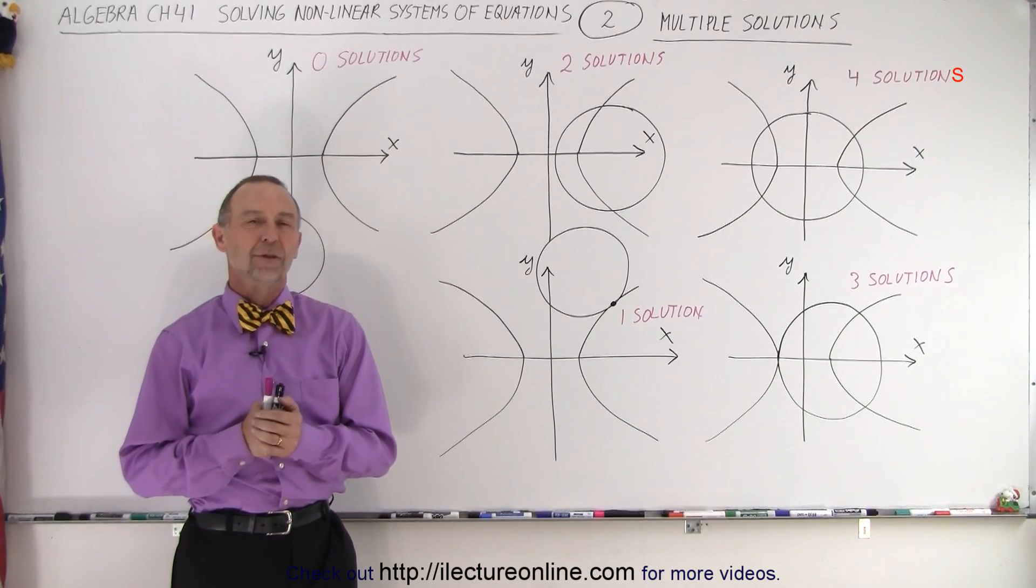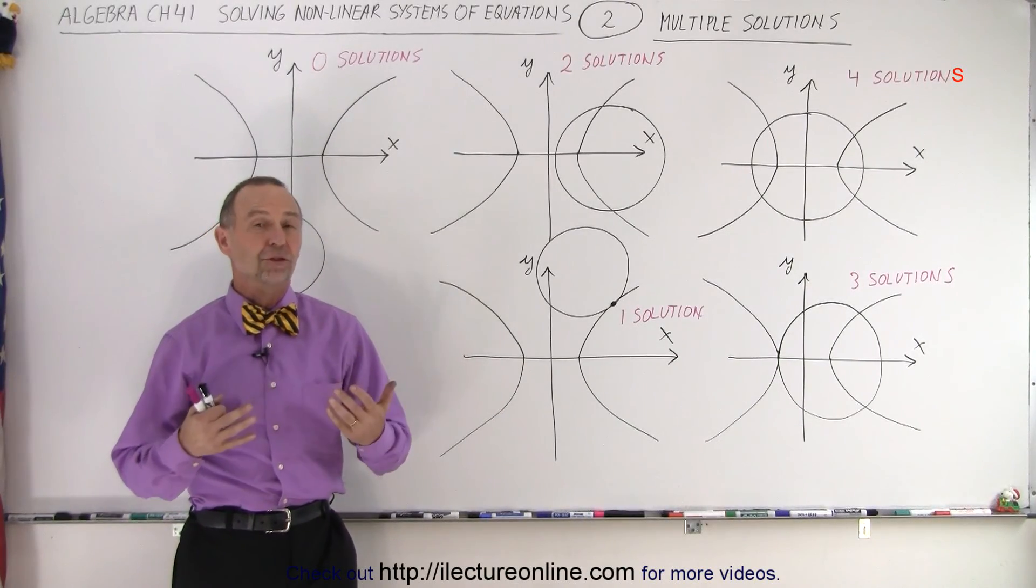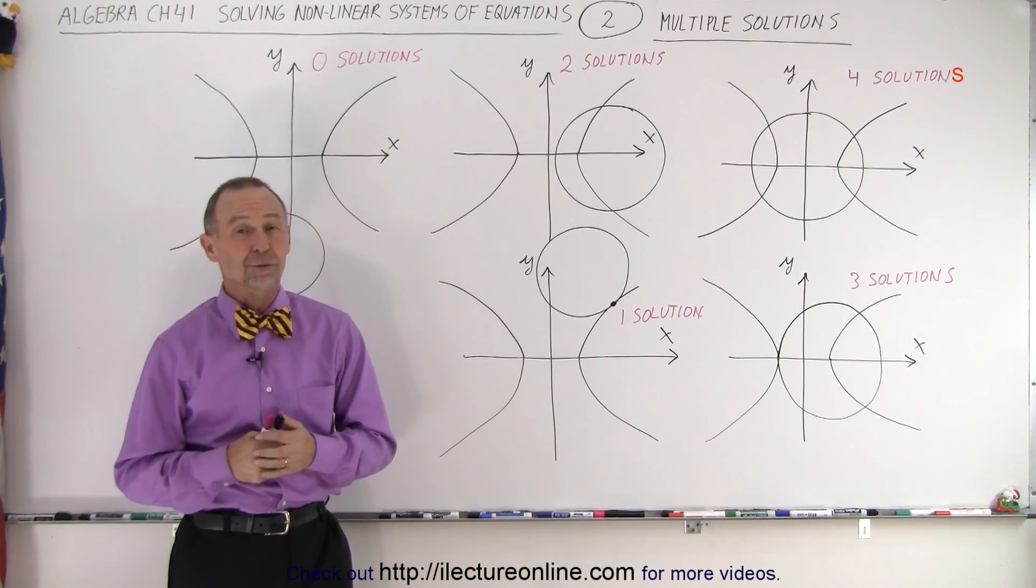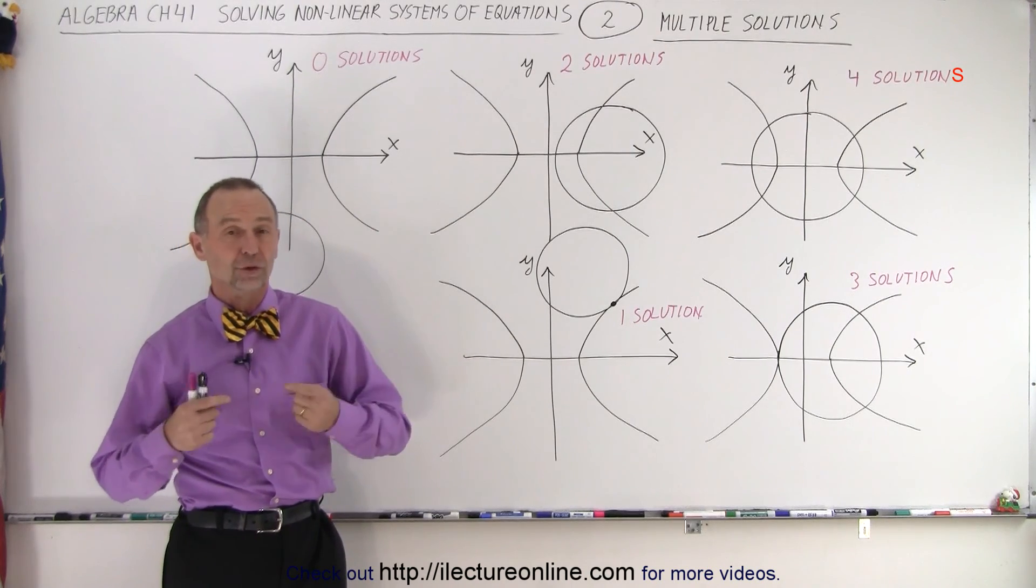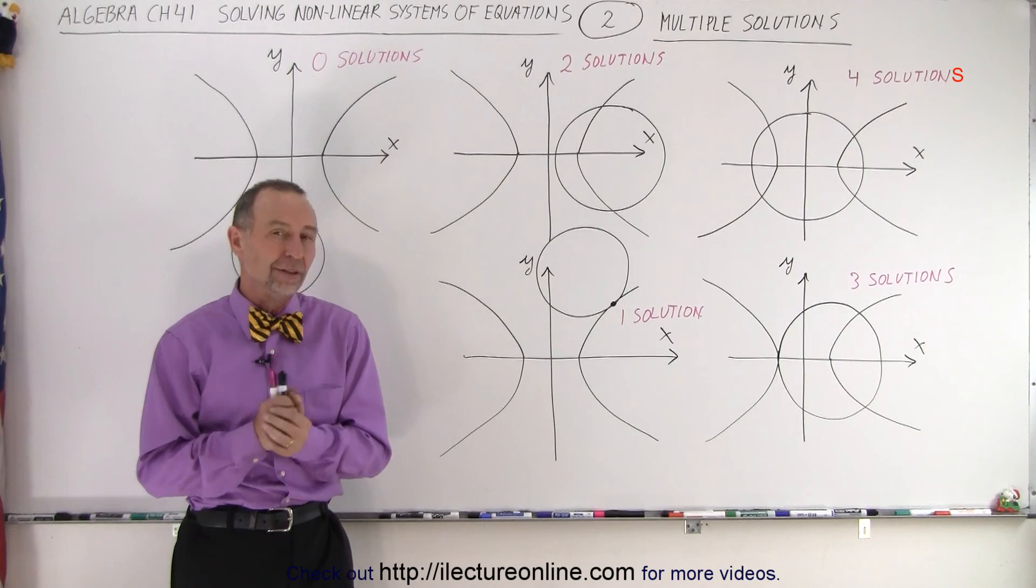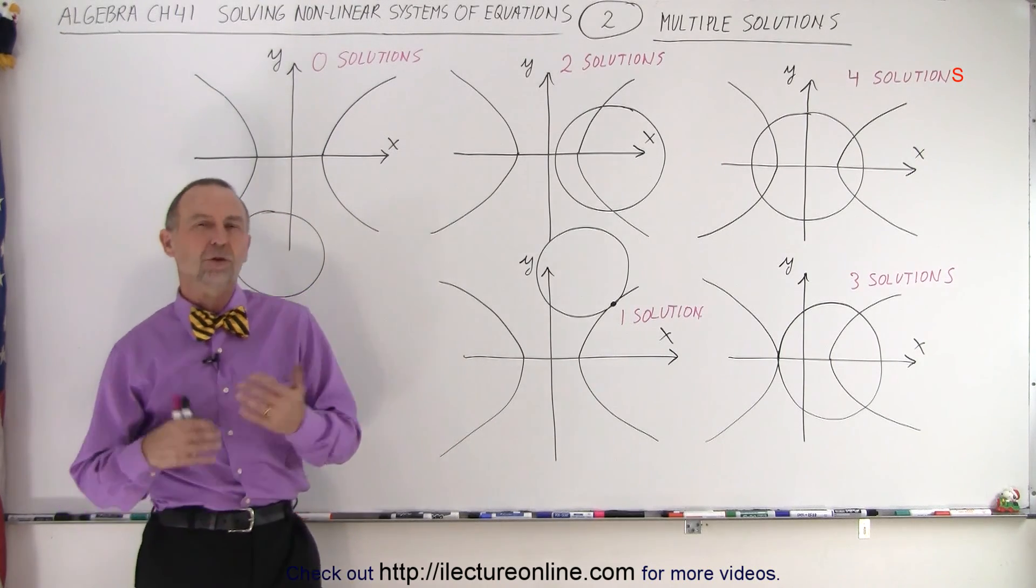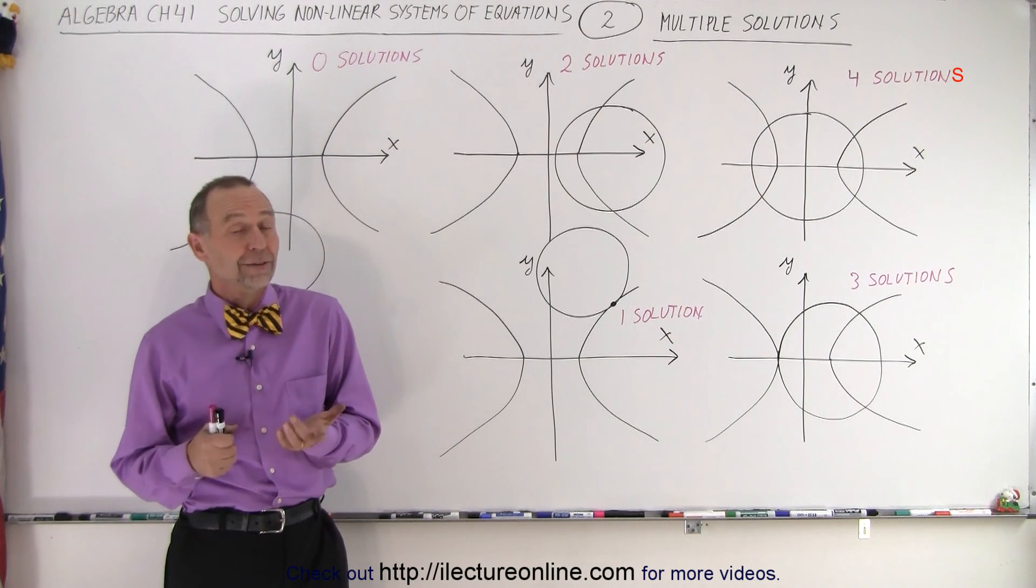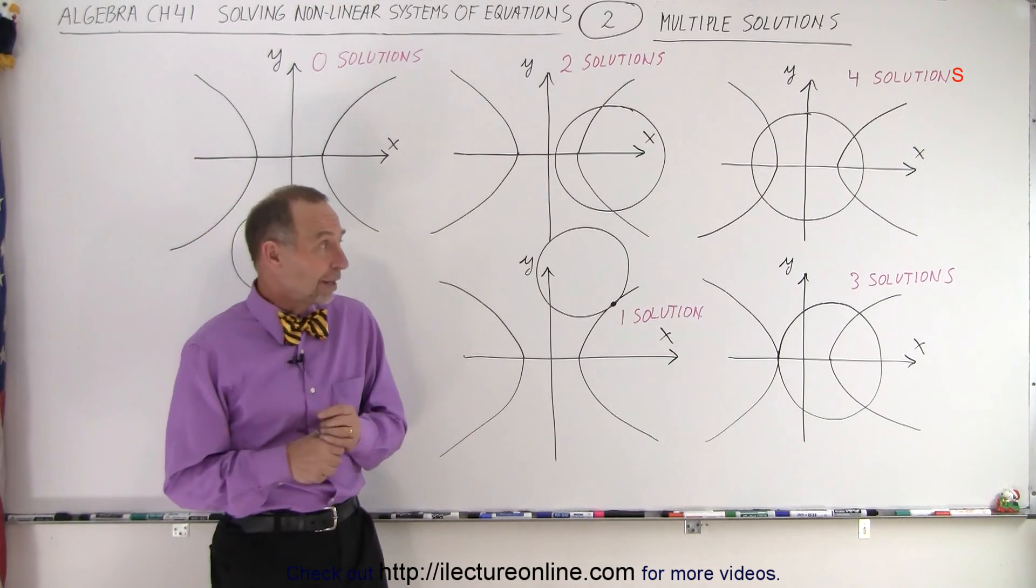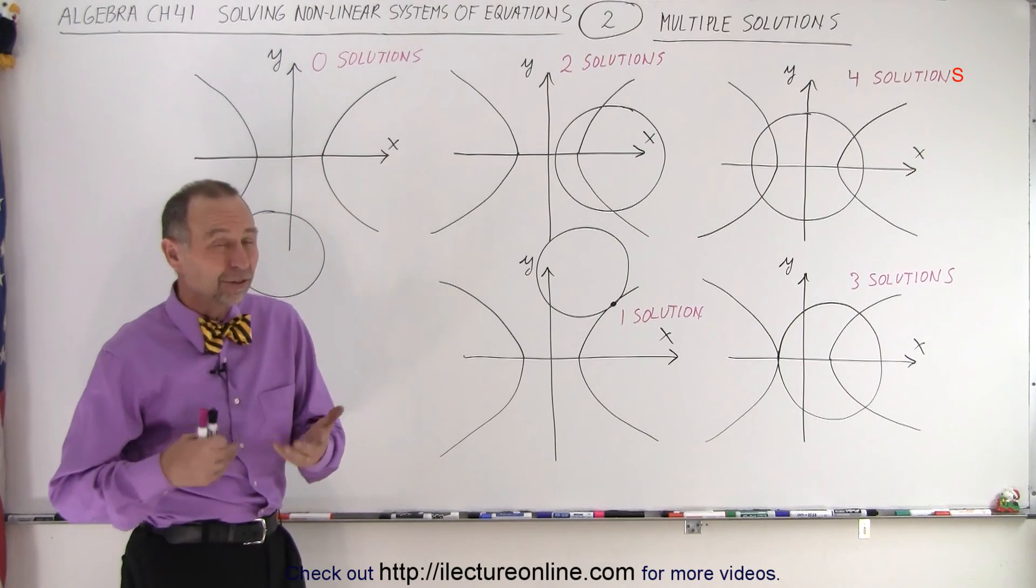Welcome to our lecture online. So let's say you're given two functions, they're nonlinear functions, and you're supposed to find the solution, in other words the places where the two functions cross. And let's say one of them is a circle and the other one is a hyperbola. How many solutions can you expect? And it turns out there's a lot of opportunities, a lot of different possibilities.